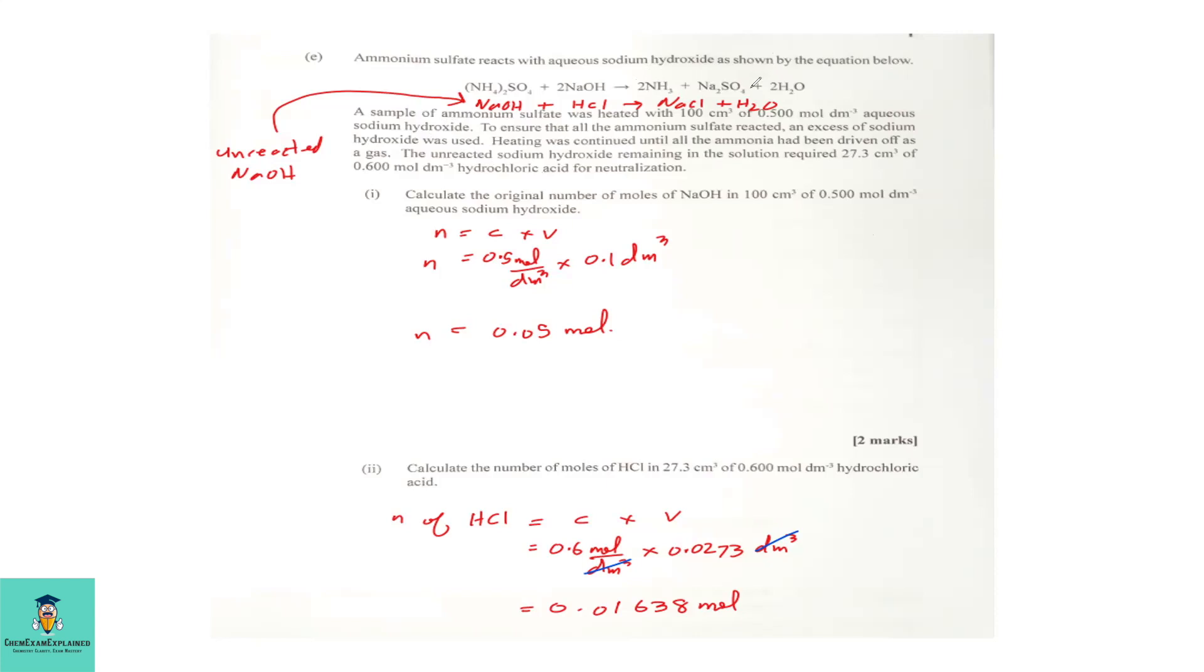A sample of ammonium sulfate was heated with 100 cm³ of 0.500 moles per dm³ aqueous sodium hydroxide. To ensure that all the ammonium sulfate reacted, an excess of sodium hydroxide was used. Heating was continued until the ammonia had been driven off as a gas. The unreacted sodium hydroxide remaining in the solution required 27.3 cm³ of 0.6 moles per dm³ hydrochloric acid for neutralization.